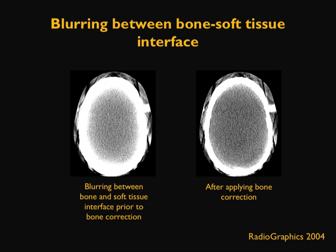Here is an example using a skull phantom. On the left-hand side, due to increased attenuation on the bony surface, there is blurring between the bone and soft tissue interface. This skull phantom consists of two very different attenuation materials. When proper bone correction is applied, you can see the images after correction, which eliminates this blurring between the dense bone and soft tissue interface.